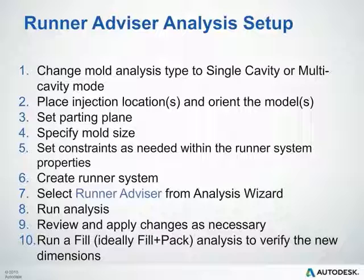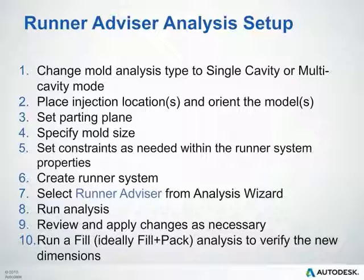Next, you'll place your injection cones and orient the model, set your parting plane, specify your mold size, and set constraints as needed within the runner system properties. Then create your runner system, select the runner advisor analysis sequence from the wizard, and run the analysis. Review and apply any changes as necessary, and then run a fill analysis to verify the new runner dimensions. We'll go through each one of these steps, and there will be a practice at the end for you to practice these skills.